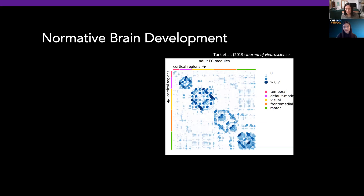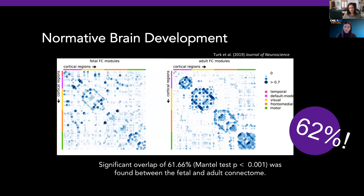With colleagues in the Netherlands, we decided to try to quantify how much overlap exists in fetal and adult overall network organization. In adults, we show the top 10% strongest connections across the entire brain as blue dots, sorted by the neighborhoods they reside in — a fingerprint of who is talking to who. Performing the same analysis in a group of fetuses, where 100% is a completely identical fingerprint and zero is none, we found 62% significant overlap between the fetal and the adult connectome.